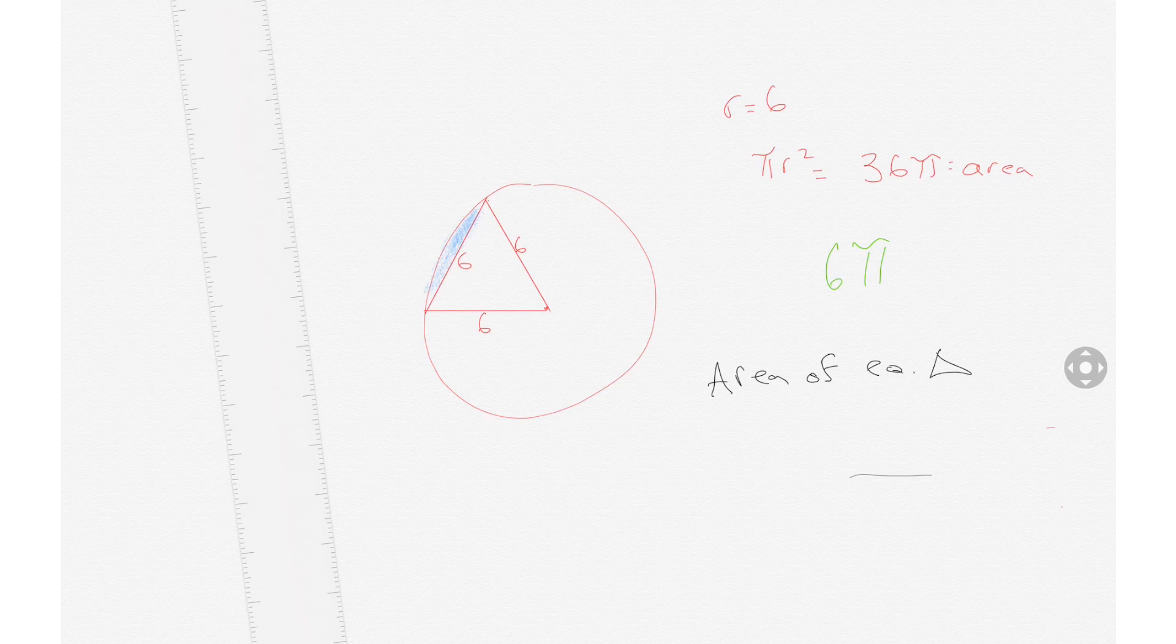There's a few ways to do this. You should just use that simple formula, which is that area of the equilateral triangle equals the square root of 3 divided by 4 times the side squared. So the side is 6.